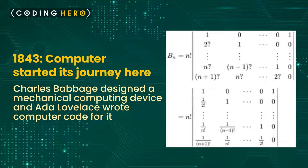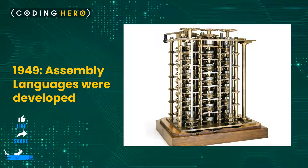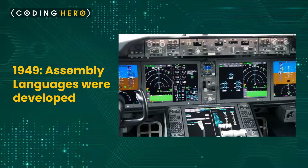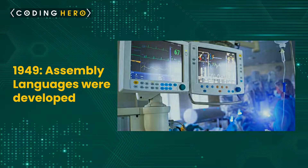In 1949, assembly languages were developed. It is a type of low-level language that mainly consists of instructions — kind of symbols — that only machines could understand. Even today, assembly language is used in real-time programs such as simulation, flight navigation systems, and medical equipment, for example fly-by-wire systems. It is also used to create computer viruses.